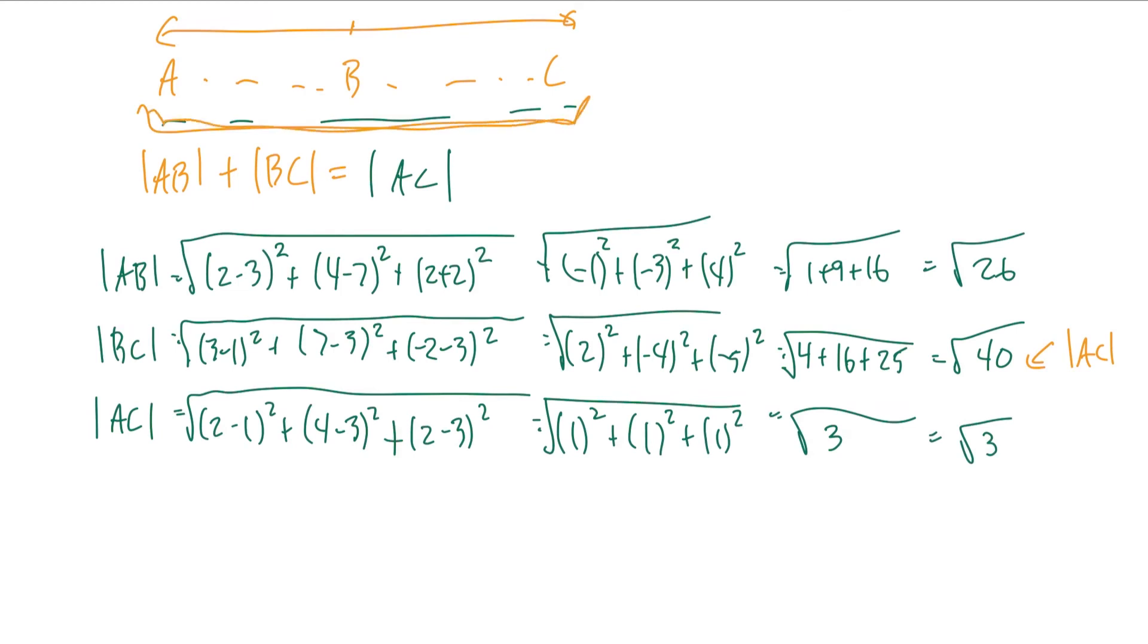26 and 3 are interchangeable, so do AB plus AC, and that should equal BC.